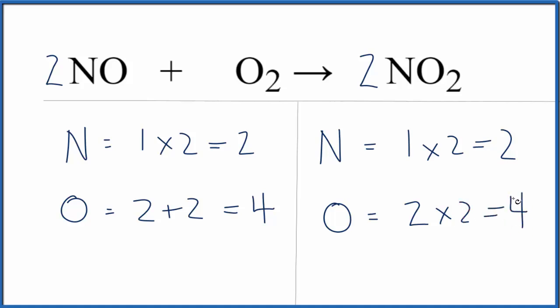And we've balanced this equation. The trick here if you have an odd number of oxygen starting out, try to get that to an even number and that'll make the equation a lot easier to balance.